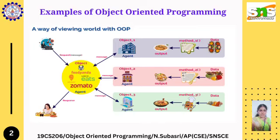Moving on to the example on our slide — a way of viewing your world with OOP. Let me take the example of Zomato, or similar apps like Uber, Food Panda, or KFC — any online application you use for ordering food. We'll look at how they receive requests and send responses, which is done with the help of object oriented programming.